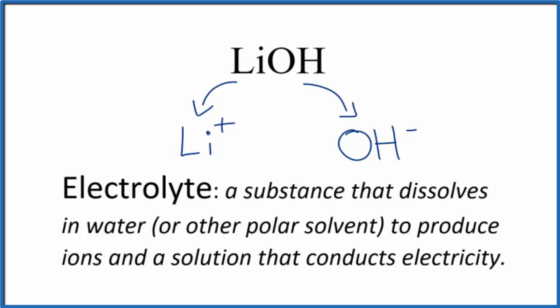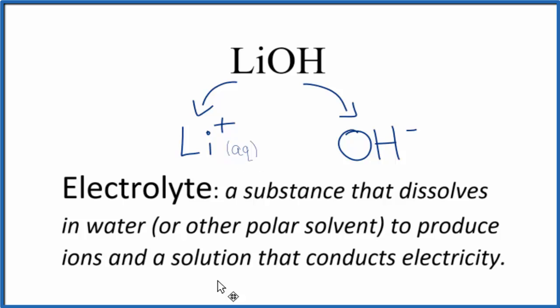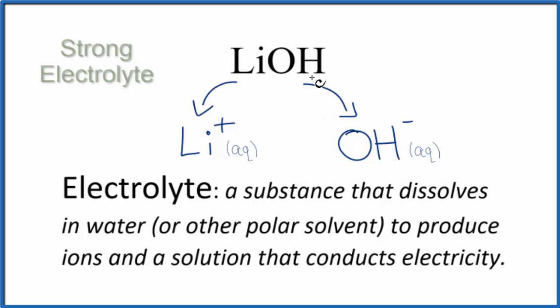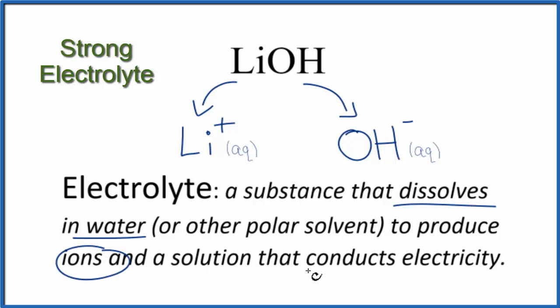Since LiOH is a strong base, it's soluble and it dissolves in water. We put a little 'aq' to show that it's aqueous. So based on our definition for an electrolyte, lithium hydroxide dissolves in water, it's soluble, produces these ions, and it will conduct electricity.